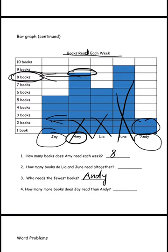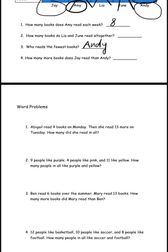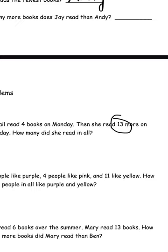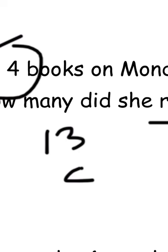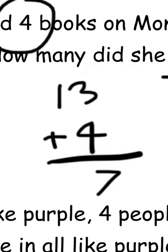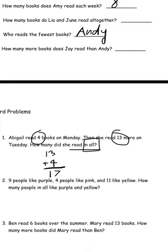Number 1 says, Abigail read 4 books on Monday, then she read 13 more on Tuesday. How many did she read in all? We need to add them together because it says 'how many in all,' which means we need the total number. 3 plus 4 is 7, and 1 plus 0 is 1, so it's going to be 17. 17 is going to be the answer.